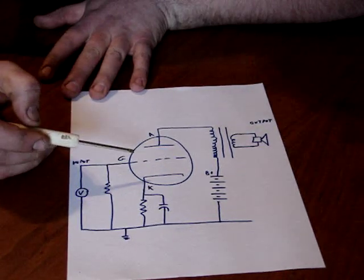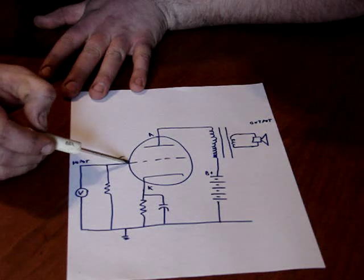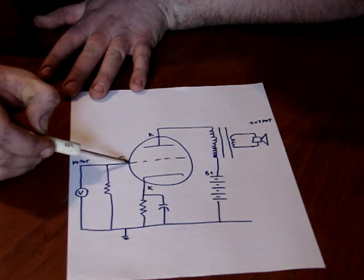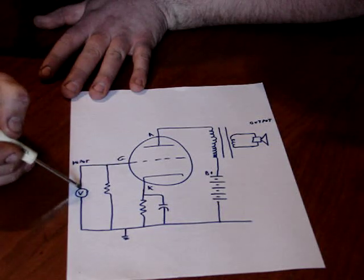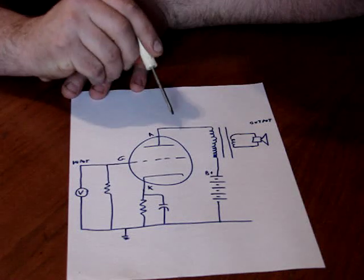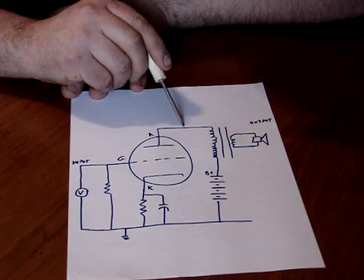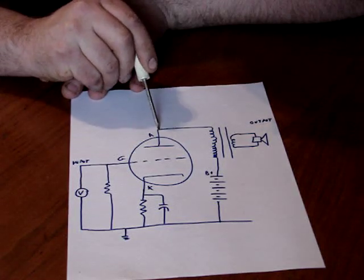Now, with a standard power tube, we'll say the bias should be set at 80 milliamps. That means with no signal going in, if you put a current meter right here,